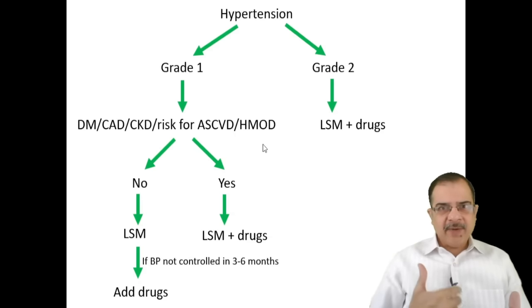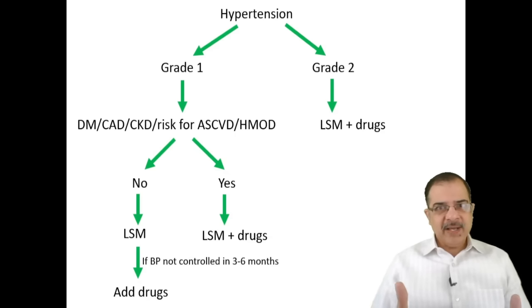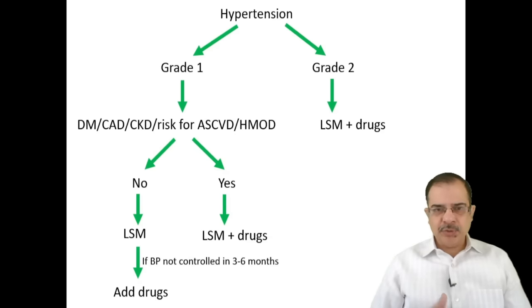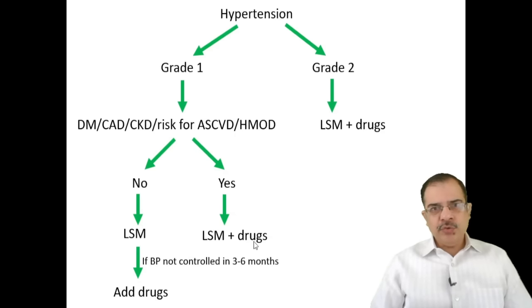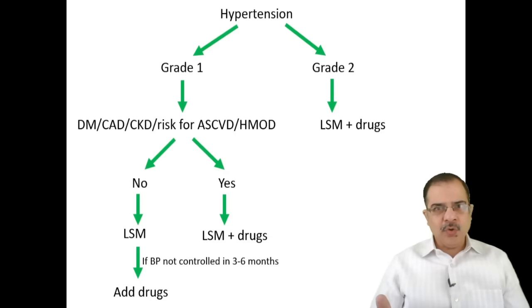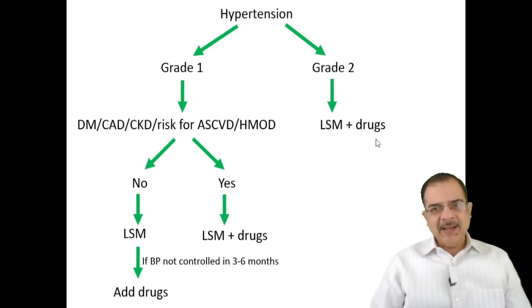Examples of hypertension-mediated organ damage include hypertensive retinopathy, albuminuria due to hypertension, or evidence of left ventricular hypertrophy. If any of these comorbidities or organ damage is present, start antihypertensive drugs along with lifestyle modification. If none are present, continue with lifestyle modification and keep the patient in follow-up every three to six months. If blood pressure remains high, then add drugs. For Grade 2 hypertension, lifestyle modification with drugs should be started immediately.